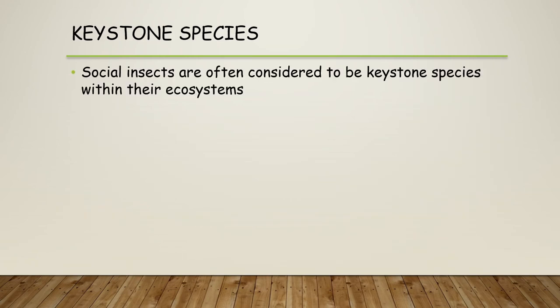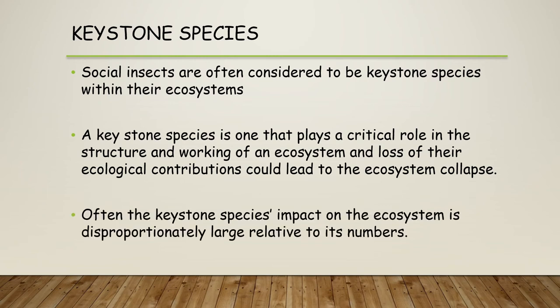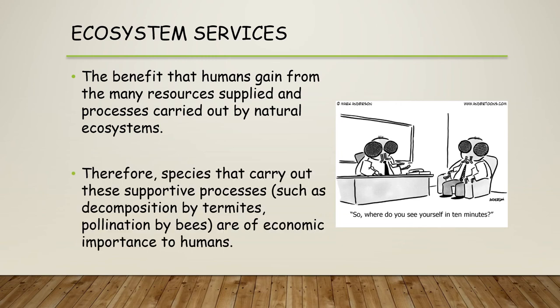Social insects are often considered to be keystone species within their ecosystems — species that play a critical role in the structure and working of an ecosystem, and whose loss could lead to ecosystem collapse. The keystone species' impact is often disproportionately large relative to its numbers. Losing species like bees could lead to a massive global impact for humans, and the economic importance of resources and processes carried out by natural ecosystems means we need to protect these species and understand our impact on them.